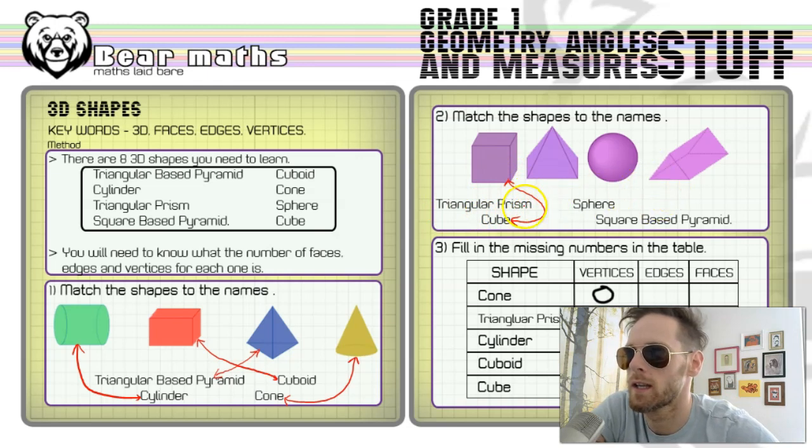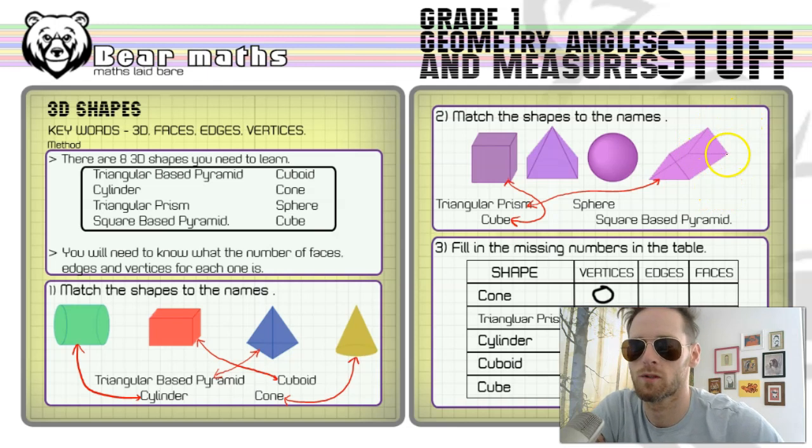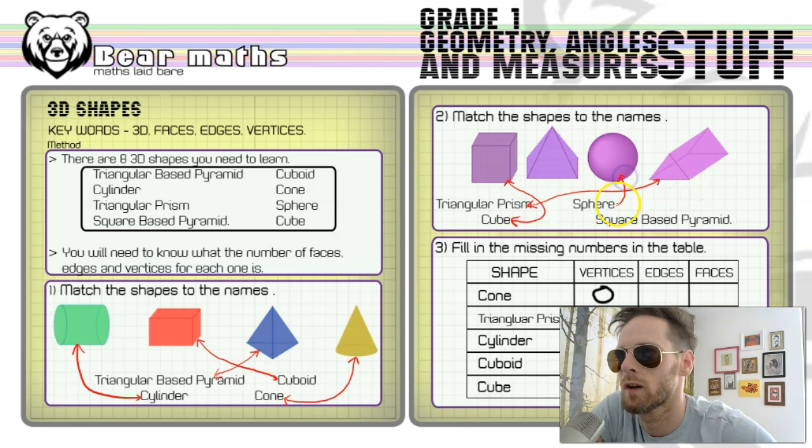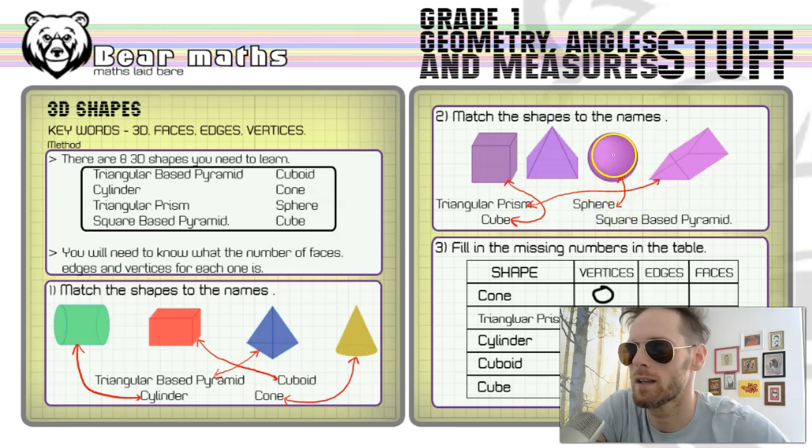A triangular prism is the one at the end here with a triangular face. A prism is a shape that has the same cross section going all the way through it—the same shape on the front as on the back, or the same shape on the bottom as on the top, depending which way round the shape is. A sphere is the ball-shaped one—a 3D circle, if you will.